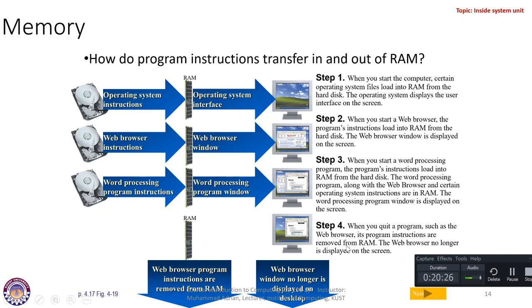Running multiple programs simultaneously is possible because of multi-processing and a larger RAM. When you quit a program such as the web browser, its program instructions are removed from the RAM and the web browser window is no longer displayed on the desktop. You can run 10 to 15 programs easily and efficiently if you have a minimum of 8 gigabytes of RAM. With that, I'm going to stop here. I hope this lecture was useful. If you have any questions, post them on the Google group. See you in the next class — take care.